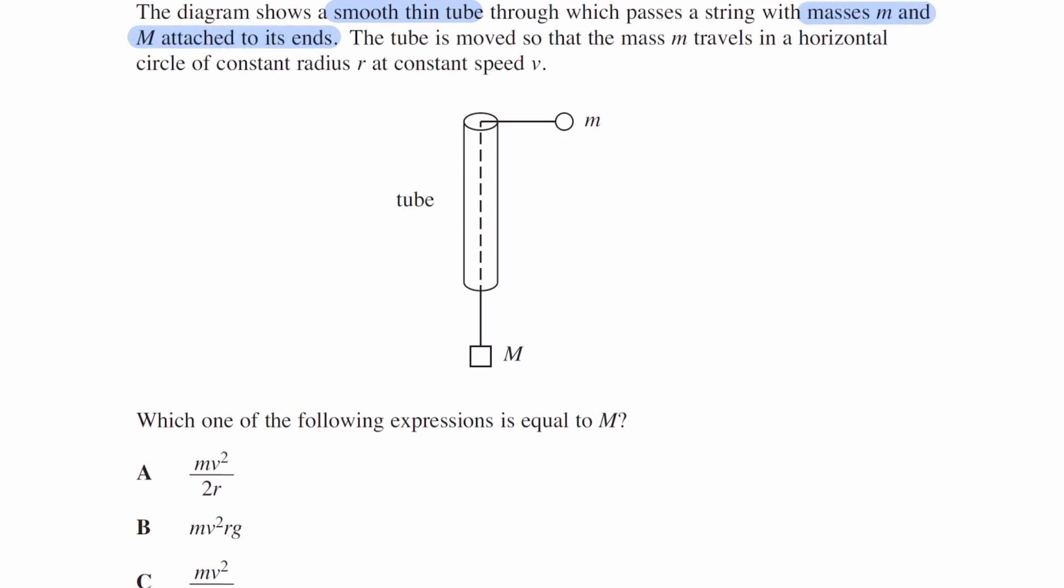The tube is moved so that the mass, lowercase m, travels in a horizontal circle, basically around like this, of constant radius r and at constant speed v.